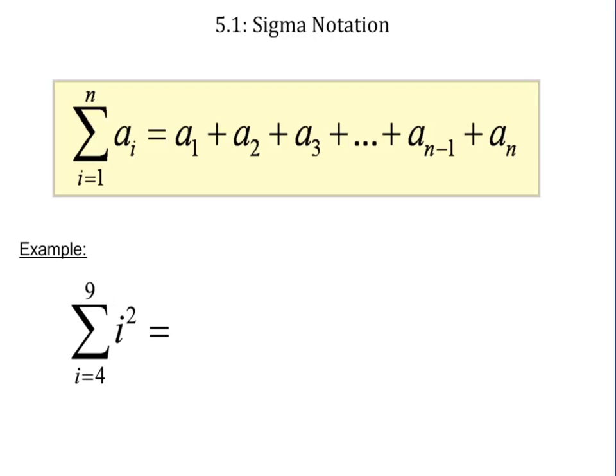That means you start with a 4, you put that in for i squared, so you get 4 squared, then you add to that 5 squared, go up by 1 every time. 6 squared, 7 squared, when do I stop? At 9.